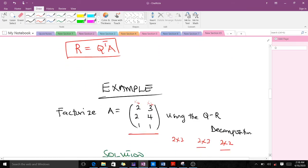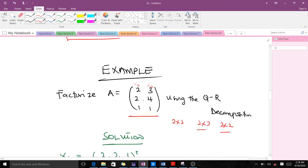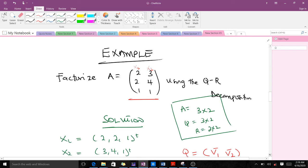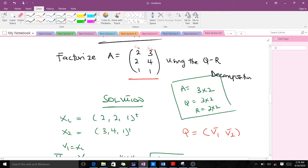Let's take an example. We are supposed to factorize this particular matrix we have here. The dimension of it has three rows and two columns, so it is 3 by 2. That means since our A is 3 by 2, our Q is also going to be 3 by 2, and our R will be 2 by 2. This has two columns, the first column and the second column. Let's name the first column X1 and the second column X2. So we have X1 equal to (2, 2, 1) and X2 equal to (3, 4, 1).